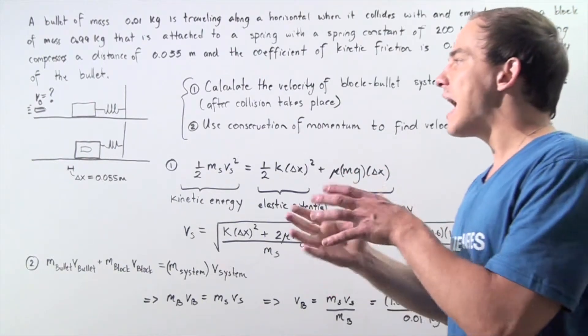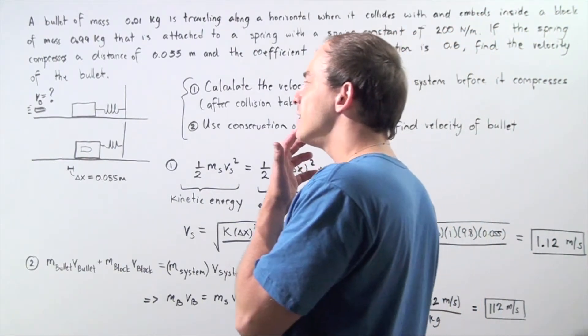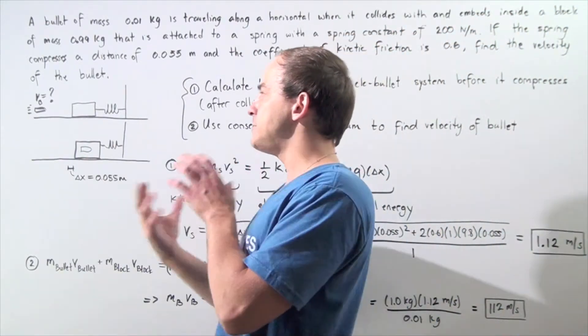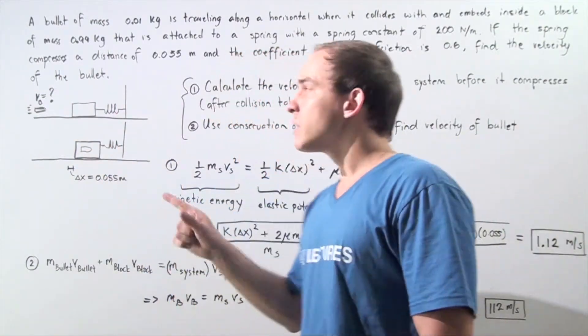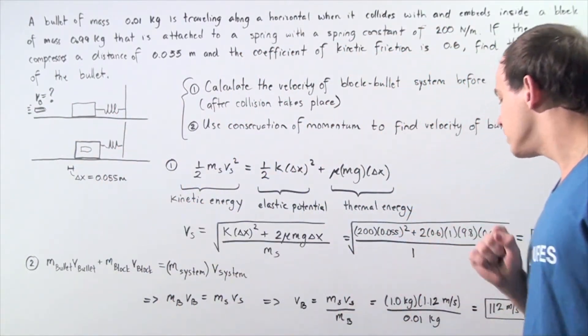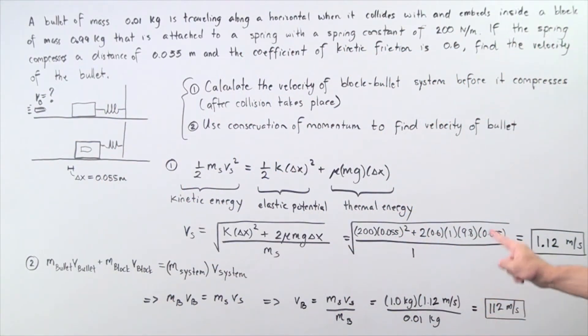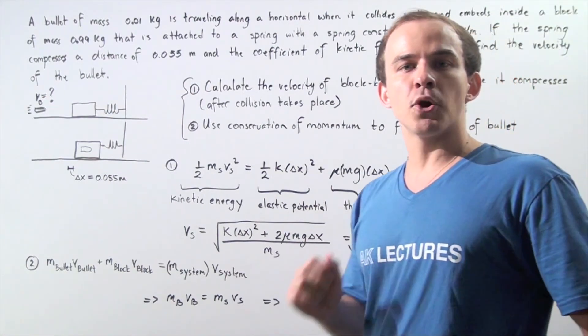That means before the completely inelastic collision takes place between the block and the bullet, the bullet is traveling with a velocity of 112 meters per second.